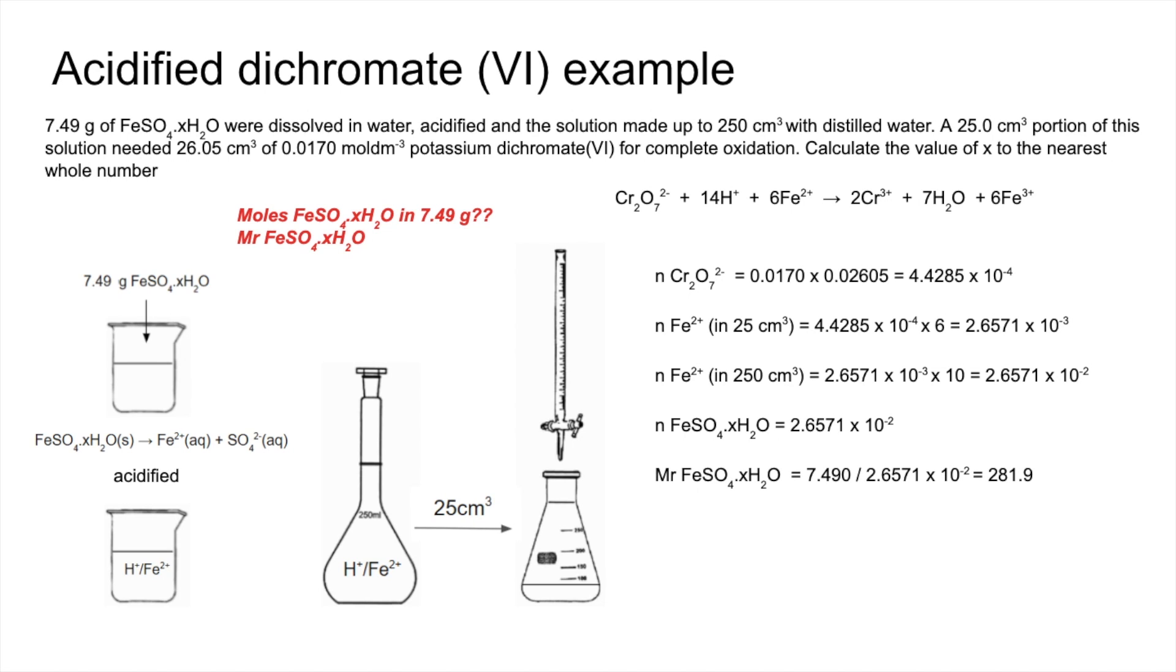So we get an MR of 281.9. And now we're going to subtract away the MR that we do know—so FeSO4 has an MR of 151.9. So if you take that away, we get 130 for the X waters. And then if we divide by 18, the MR of water, we've got 7.22 moles of water in the salt. So to the nearest whole number, X is 7.